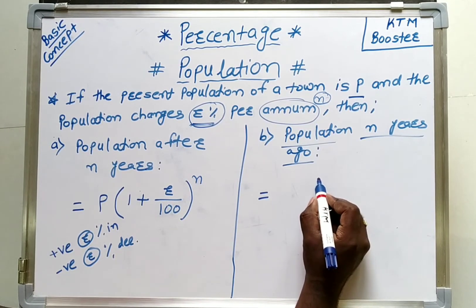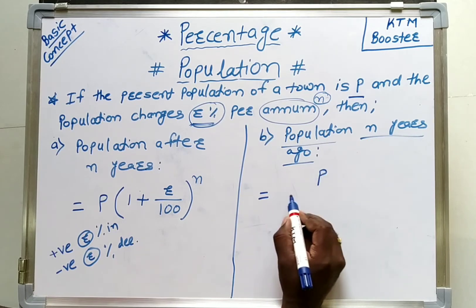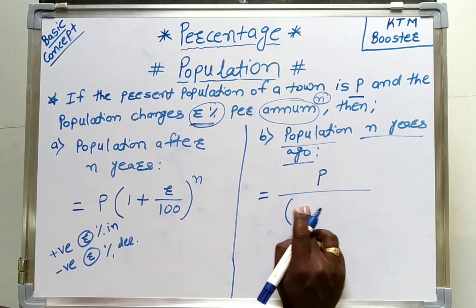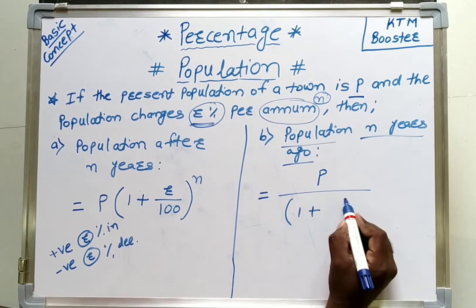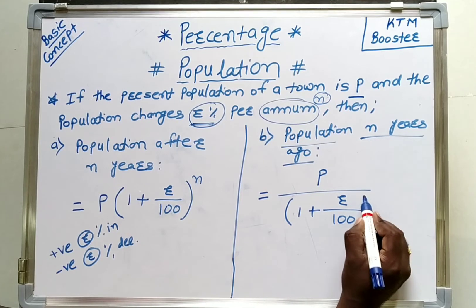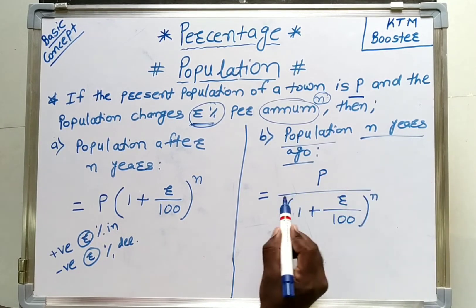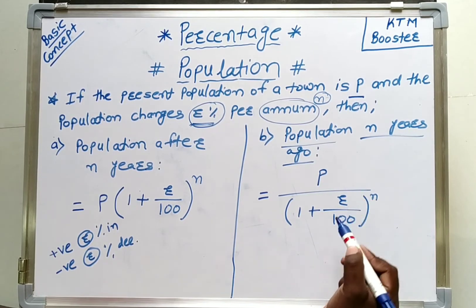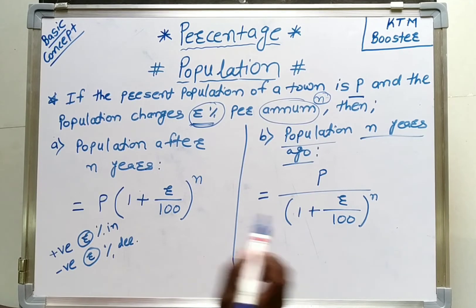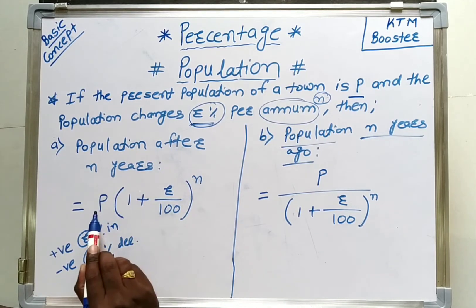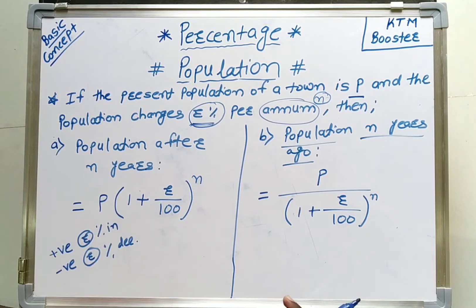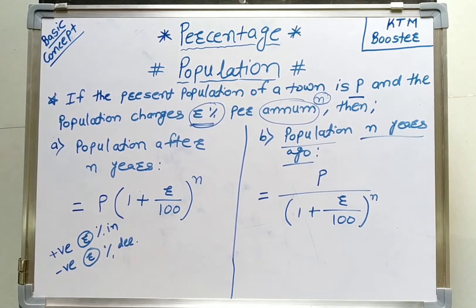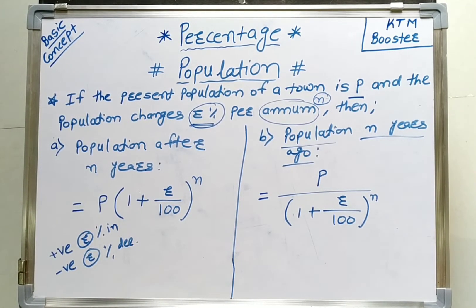Now we will see the formula for finding the population n years ago. In the denominator we write 1 plus r upon 100, bracket raised to n. So the formula is P divided by 1 plus r upon 100, raised to n. If we want the population n years ago, we divide by this factor, whereas for population after n years, we multiply by it. This is the basic concept used to find population before or after n years.